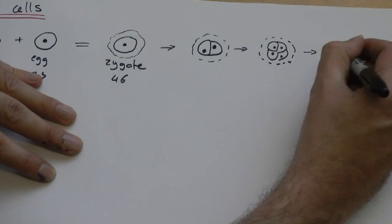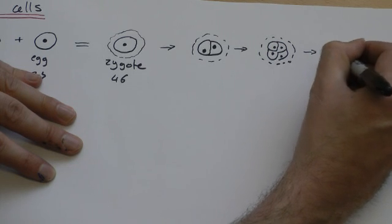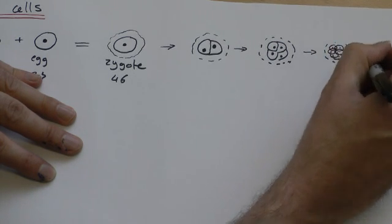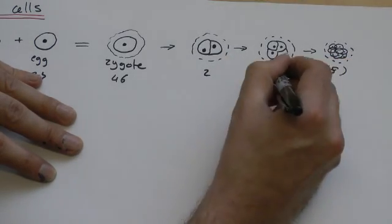And then it divides again, four, five, six, seven, eight. So we're now at an eight-cell stage. Let's just put the number of cells on there, just because we can.